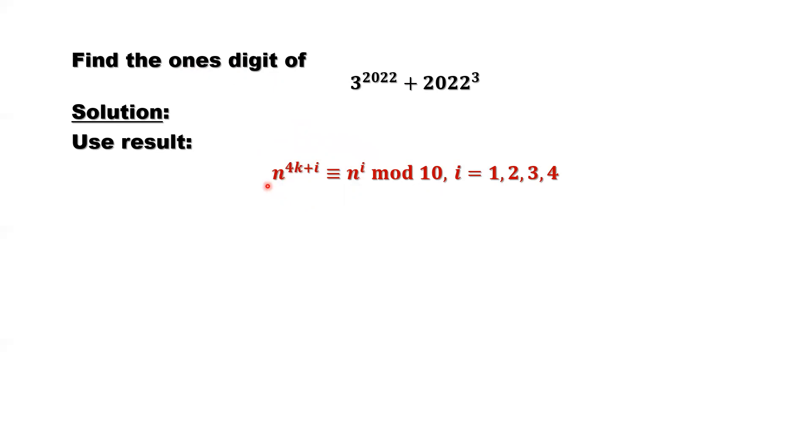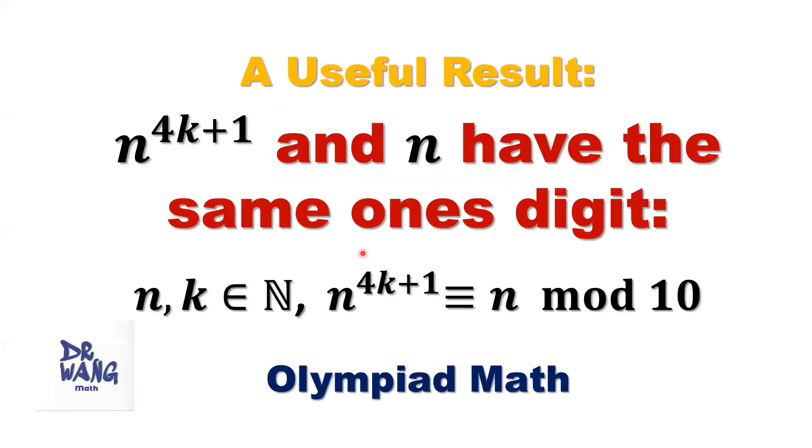What is the important part for this? Any number n to the power m, m is a positive integer, you always can rewrite m in this kind of format: 4k plus i, because i can be 1, 2, 3, or 4. If you are interested in the theory proof to know the detail, you can watch my video on YouTube.